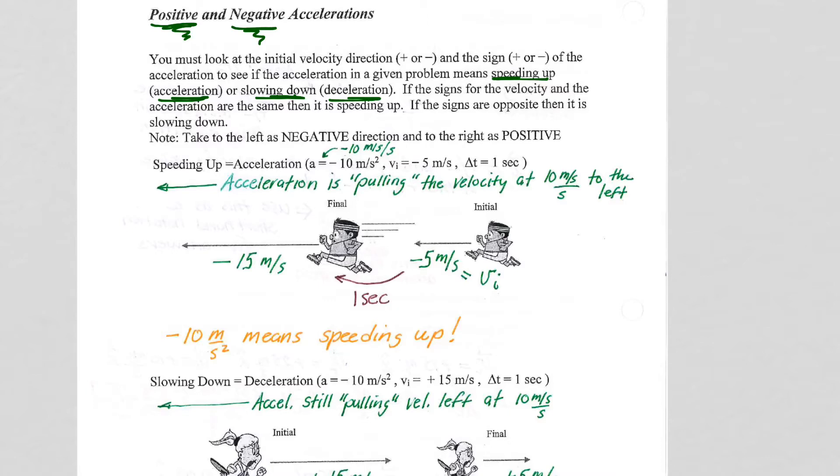When trying to understand whether the acceleration in a given problem means speeding up acceleration, or slowing down deceleration, is to look at the initial velocity direction for the velocity vector, and then look at the sign, the positive or negative, of the acceleration. That will tell you right away whether your problem is talking about accelerating or decelerating.